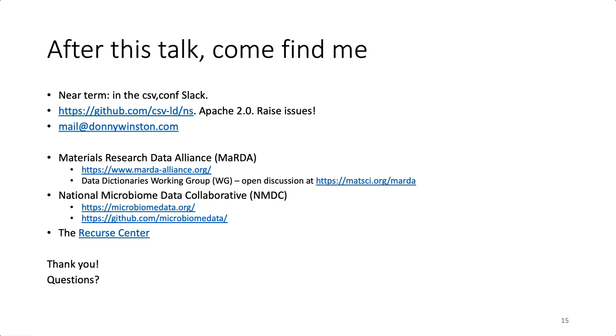Thank you very much. Are there any questions? The top question is: can you assign definitions to rows or individual cells, or just columns? The CSVW specification allows you to do much more. For simplicity's sake, just with CSVLD there's just the column stuff, but the link out to CSVW allows you to do a lot of things and relate multiple sheets. It's just a fantastic vocabulary and specification. I would recommend people look at the CSVW W3C recommendations.